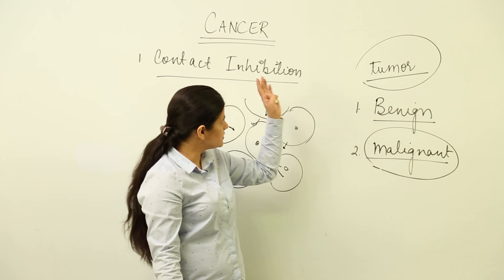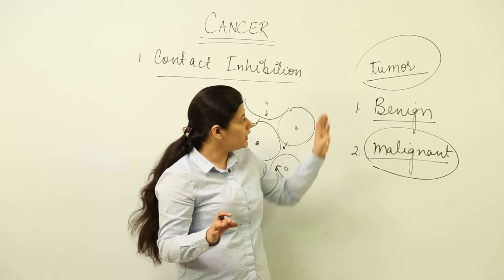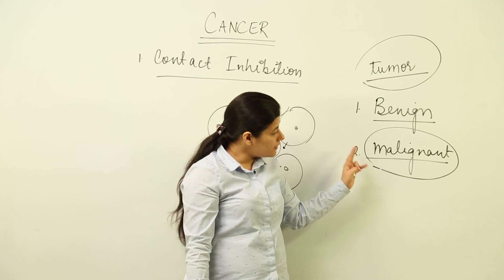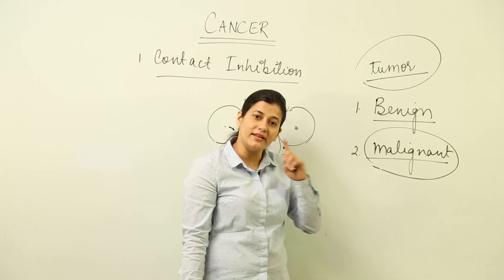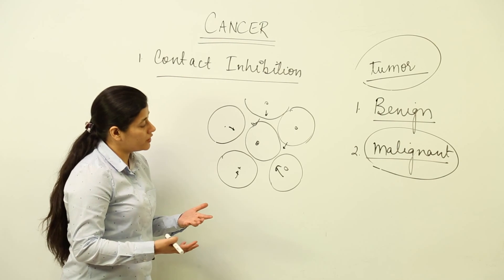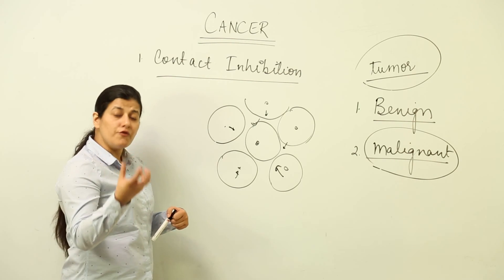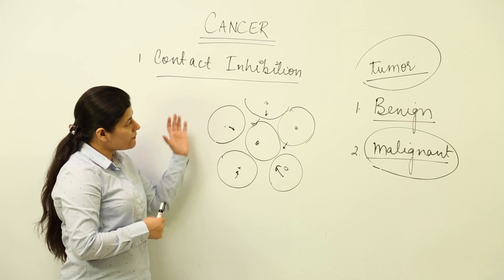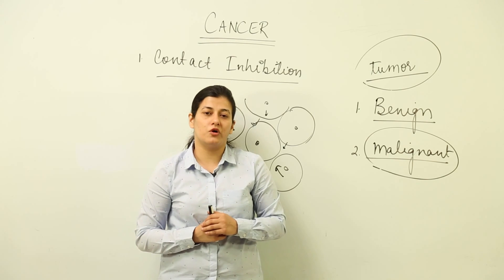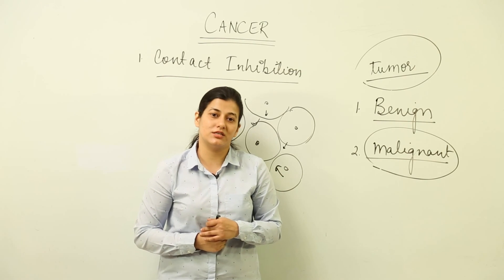To summarize: loss of contact inhibition leads to tumor formation, where cells grow without restriction. If cells stay at one location, it is a benign tumor. If they spread from one place to another, it becomes a malignant tumor — and that is cancer. Once cancer has overtaken your body, you need to be diagnosed to determine what type of cancer it is and what treatments should follow. In the next lesson, we will look at the genetic basis for the cause of cancer.